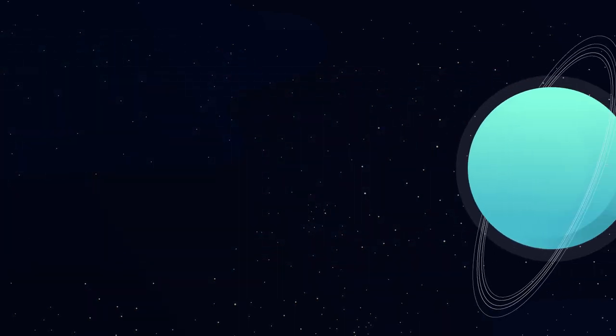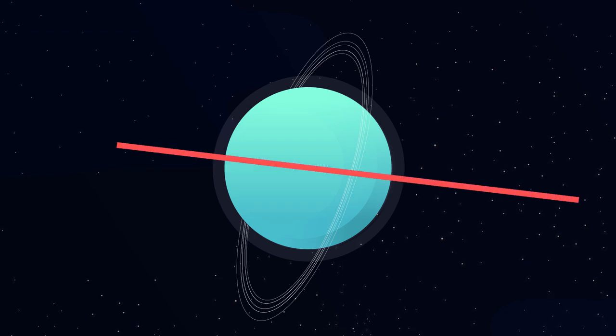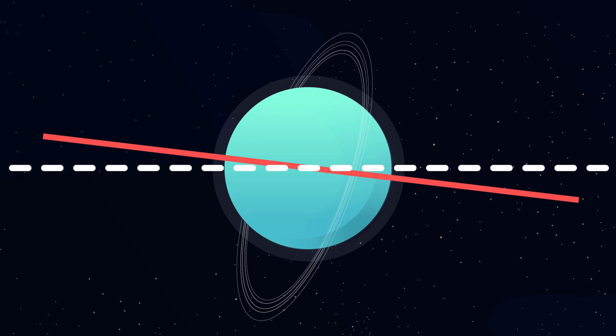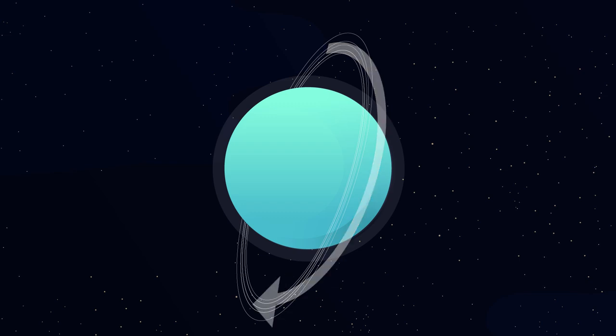Our next planet, Uranus, looks blue-green. Its axis of rotation is tilted sideways and is nearly aligned with the planet's solar orbit. The planet rotates in a clockwise direction.